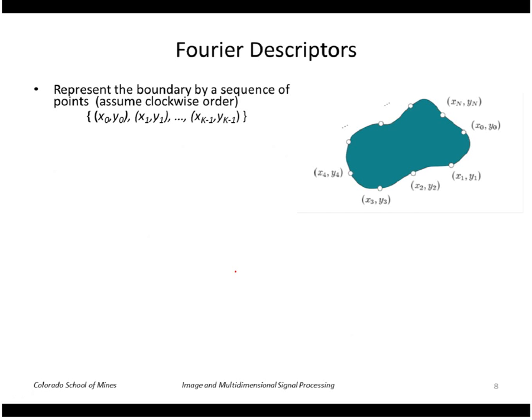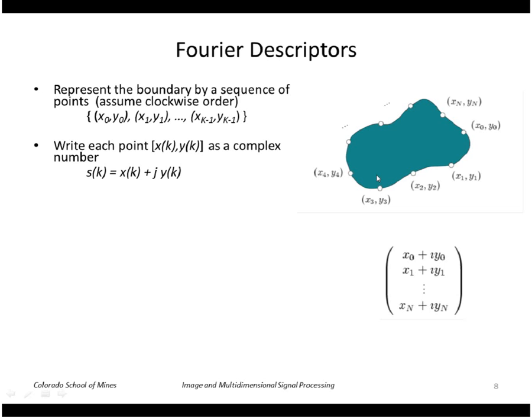Another representation of boundary is the Fourier descriptor method. Here we represent the boundary by a sequence of points as shown. We have a sequence of points along the boundary, a sequence of x, y values—let's say there's k of them. We're going to use the convention we always go in clockwise order. Then what we do is we take each x, y pair and form a complex number with it. So the x portion is the real and then we have the j imaginary number times the y part. So now we have a sequence of complex numbers.